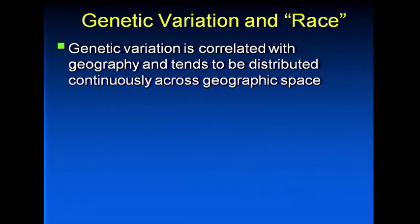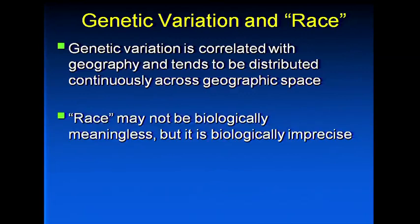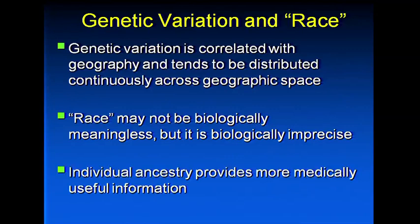What we can say about genetic variation and race is that genetic variation is correlated with geography, but distributed continuously across space, making it hard to designate specific boundaries between populations. Race as conventionally defined may not be biologically meaningless, but it is biologically very imprecise. Looking at individuals and their ancestry will give us much more medically useful, actionable information than a self-identified category.